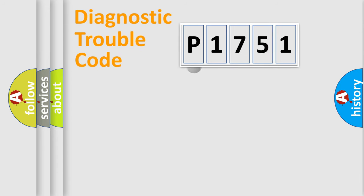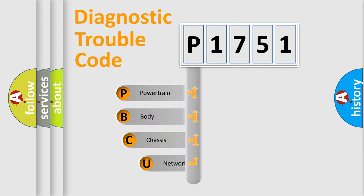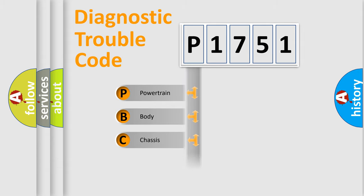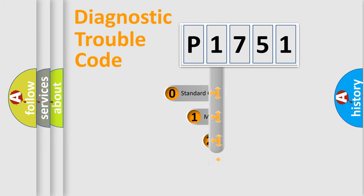First, let's look at the history of diagnostic fault code composition according to the OBD2 protocol, which is unified for all automakers since 2000. We divide the electric system of an automobile into four basic units: Powertrain, Body, Chassis, and Network. This distribution is defined in the first character of the code.